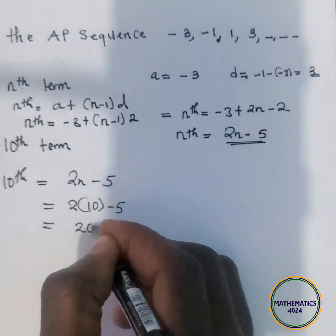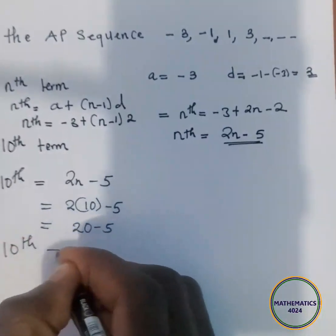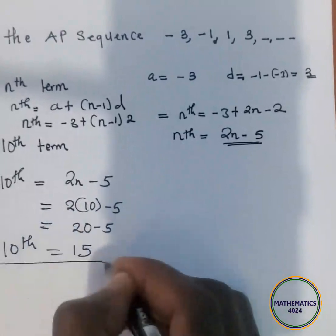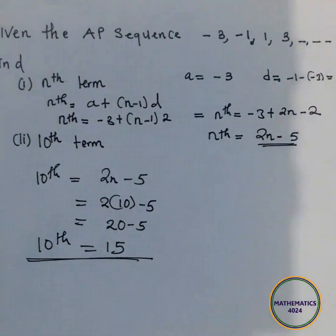Which will give us 20 minus 5, and our 10th term equals 15. I hope you get the concept now.